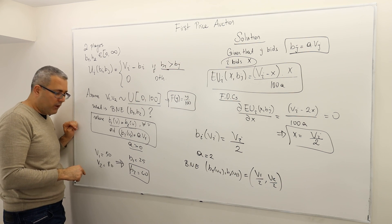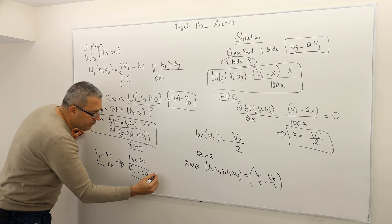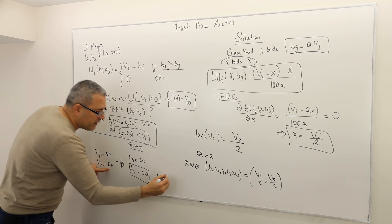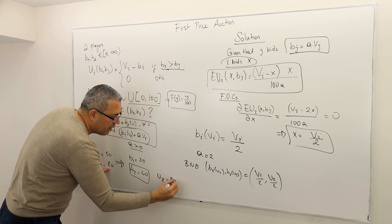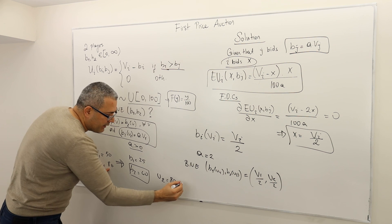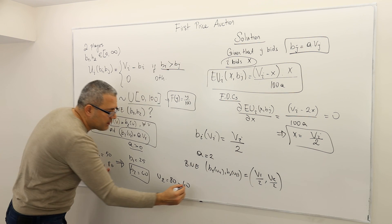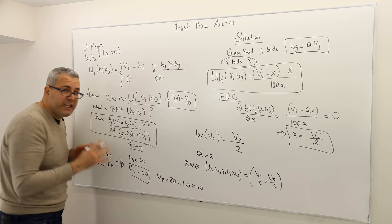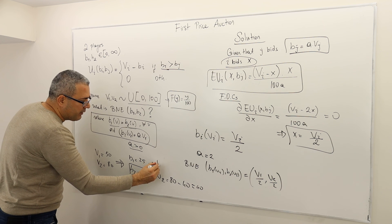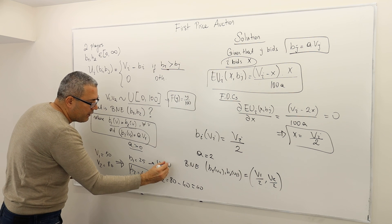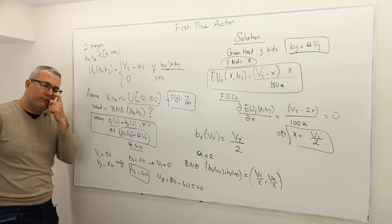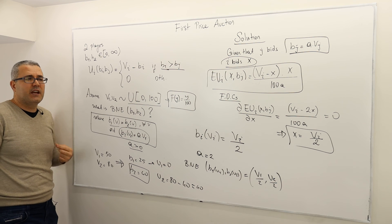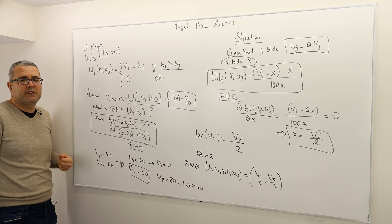What is player 2's payoff? Because he won, it's 80 minus 40 — his payoff will be $40. And what about player 1's payoff? It's going to be 0. That's the Bayesian Nash equilibrium of this game.